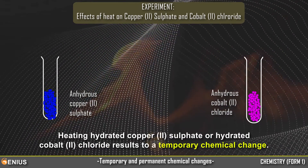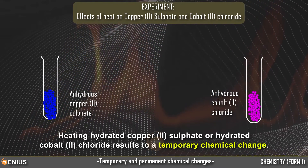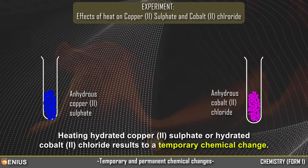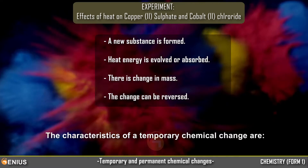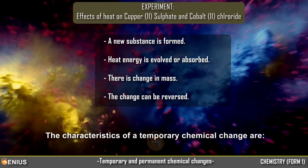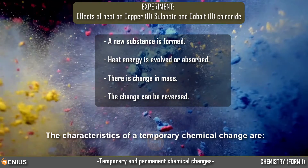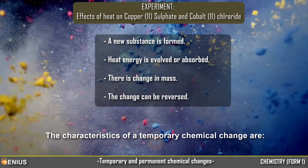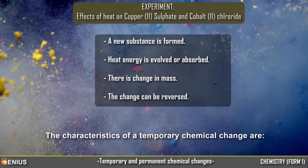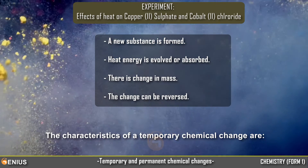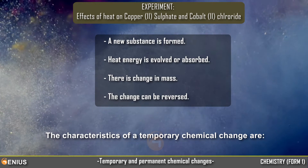Heating hydrated copper-2-sulfate or hydrated cobalt-2 chloride results in a temporary chemical change. The characteristics of a temporary chemical change are: a new substance is formed, heat energy is evolved or absorbed, there is a change in mass, and the change can be reversed.